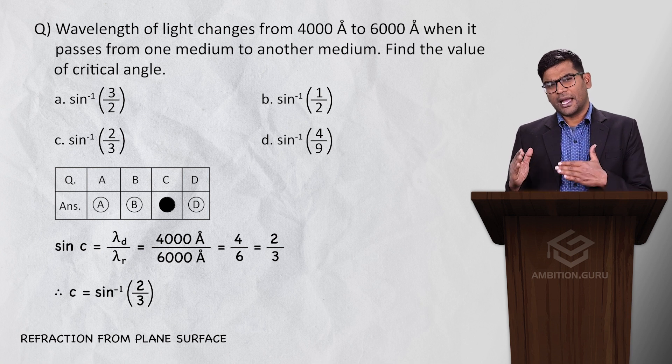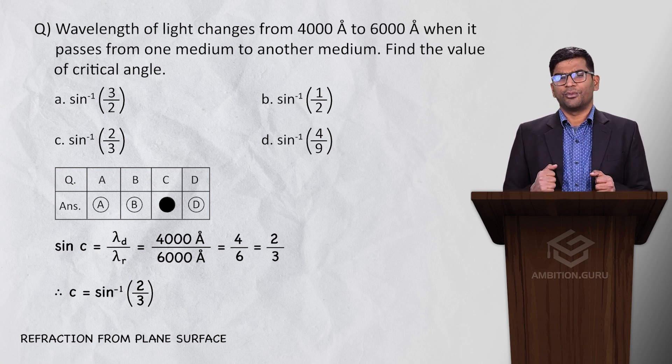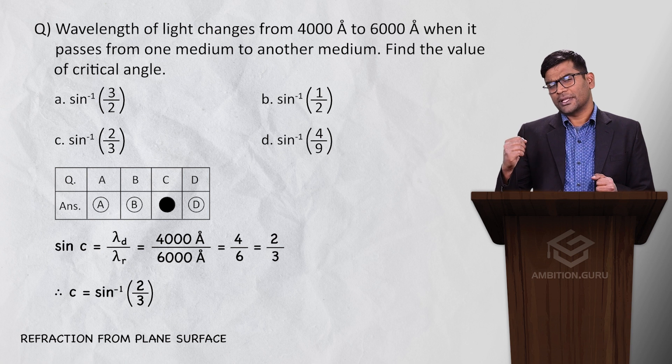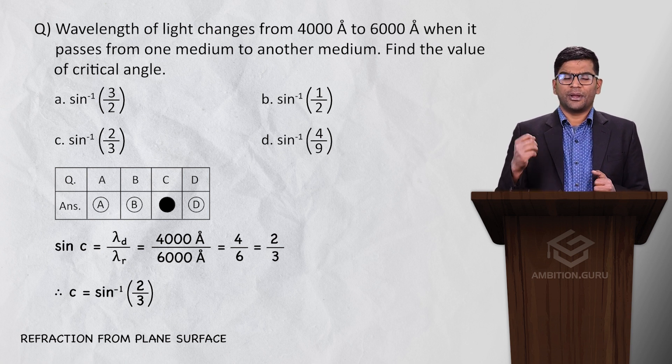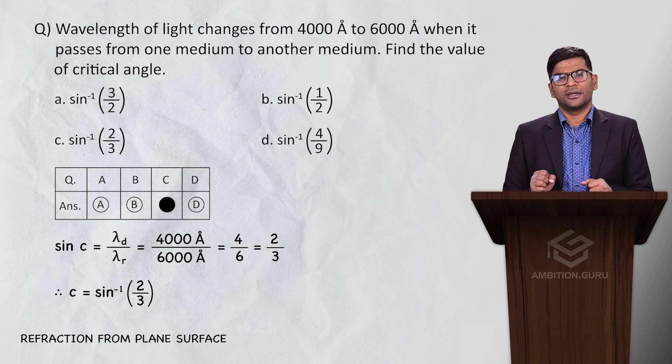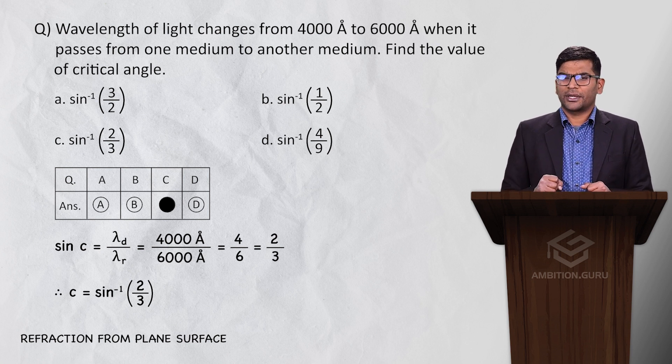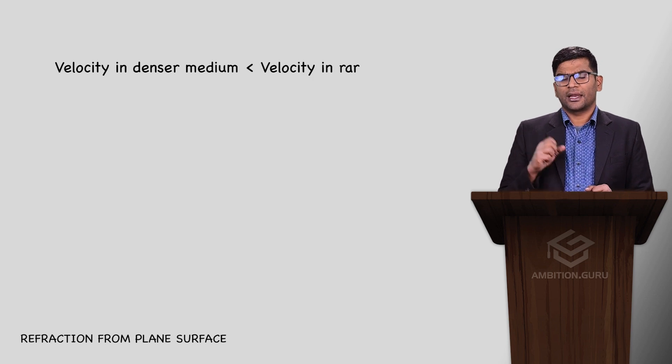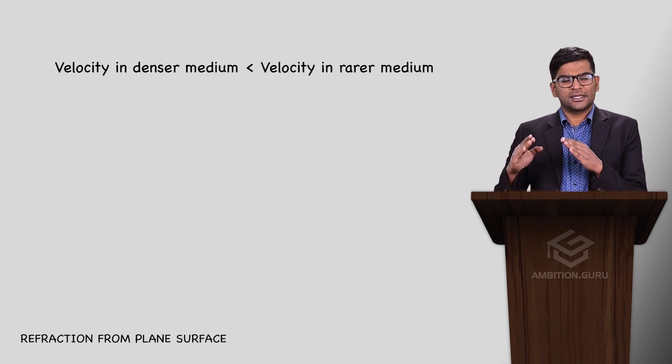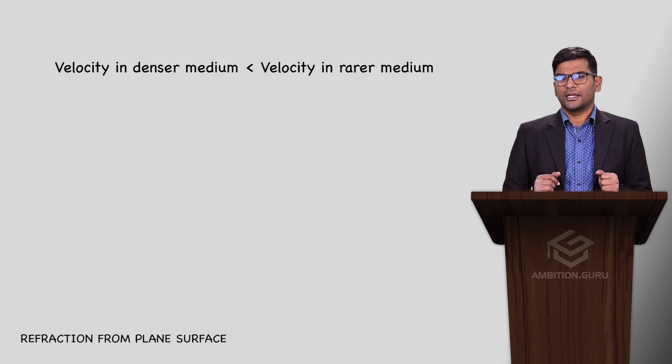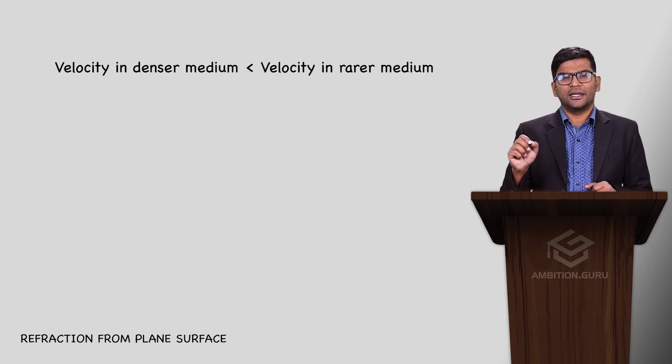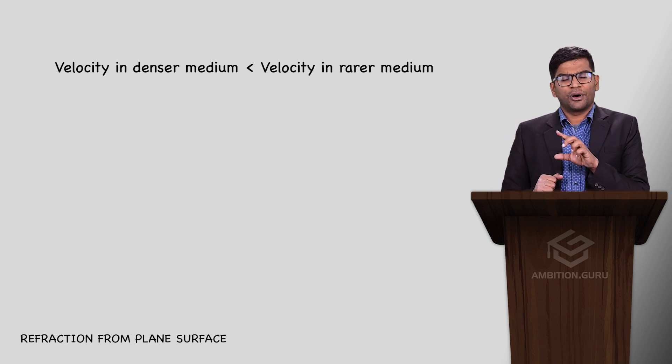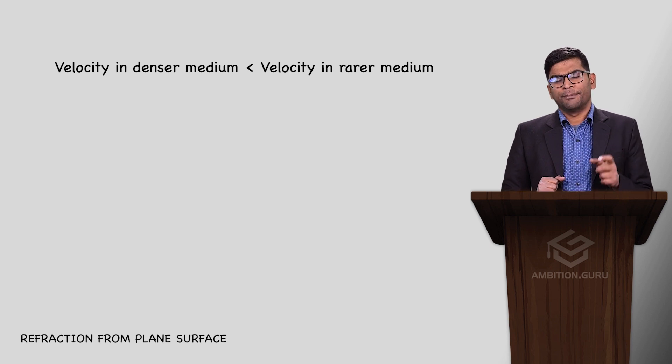Now what logic did we develop here? If there's a change in wavelength, there will also be a change in velocity. Which value is less, which value is more? In denser, velocity is less. In rarer, velocity is more. How much is sin c? We saw 2 by 3. What mistake might we make? Denser and rarer - which is which? We need to know the formula.